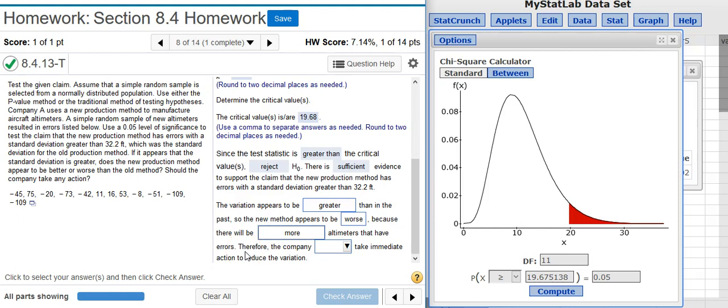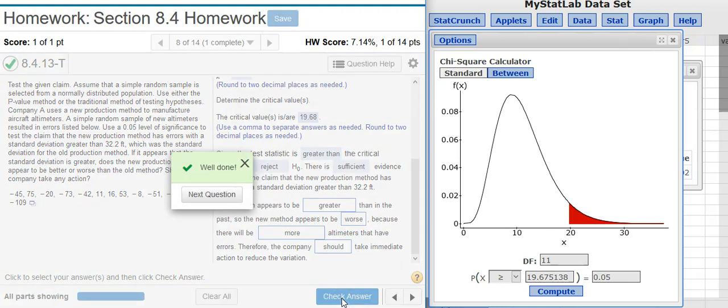And because your process is now worse, the company, yes, should take immediate action to reduce the variation.